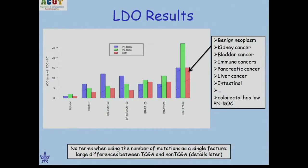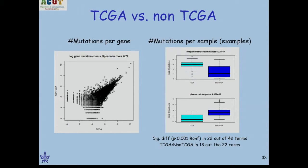Interestingly, you gain nothing by just counting the number of mutations per sample, which could be counter-intuitive given some recent papers. The main reason is very large differences between TCGA and non-TCGA studies in COSMIC. Counts of mutations per sample can differ by an order of magnitude at the median. For 42 disease ontology terms tested, 22 showed a significant difference between these two distributions at a Bonferroni-corrected threshold of 0.001. In most cases TCGA had more mutations, but the split is 9 versus 13.